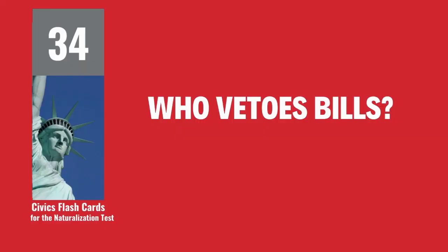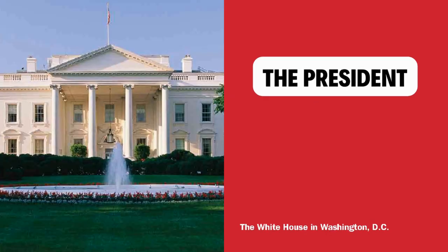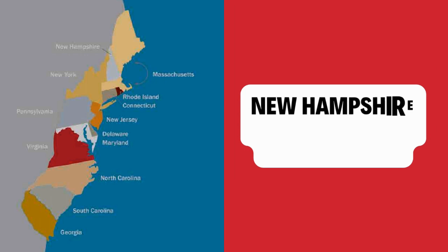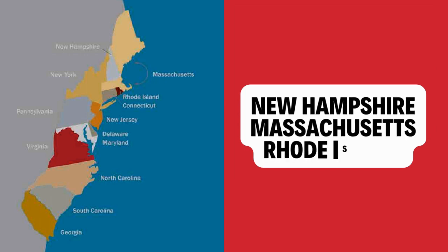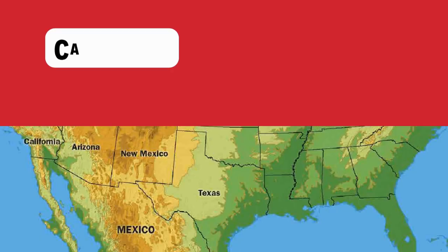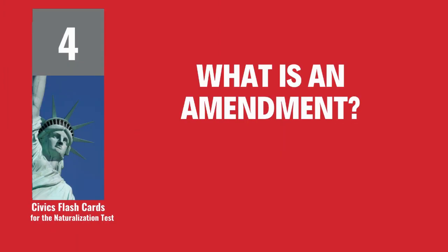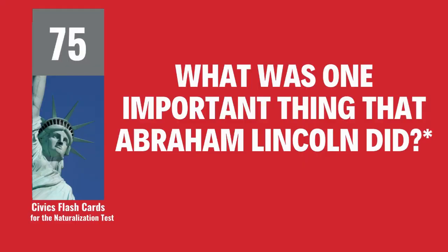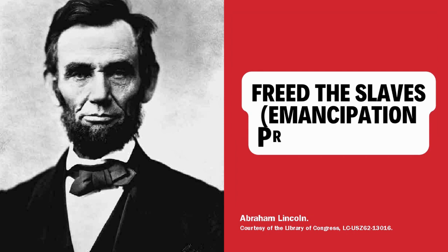Who vetoes bills? The President. There were 13 original states. Name three. New Hampshire, Massachusetts, Rhode Island. Name one state that borders Mexico. California. What is an amendment? A change to the Constitution. What was one important thing that Abraham Lincoln did? Freed the slaves — the Emancipation Proclamation.